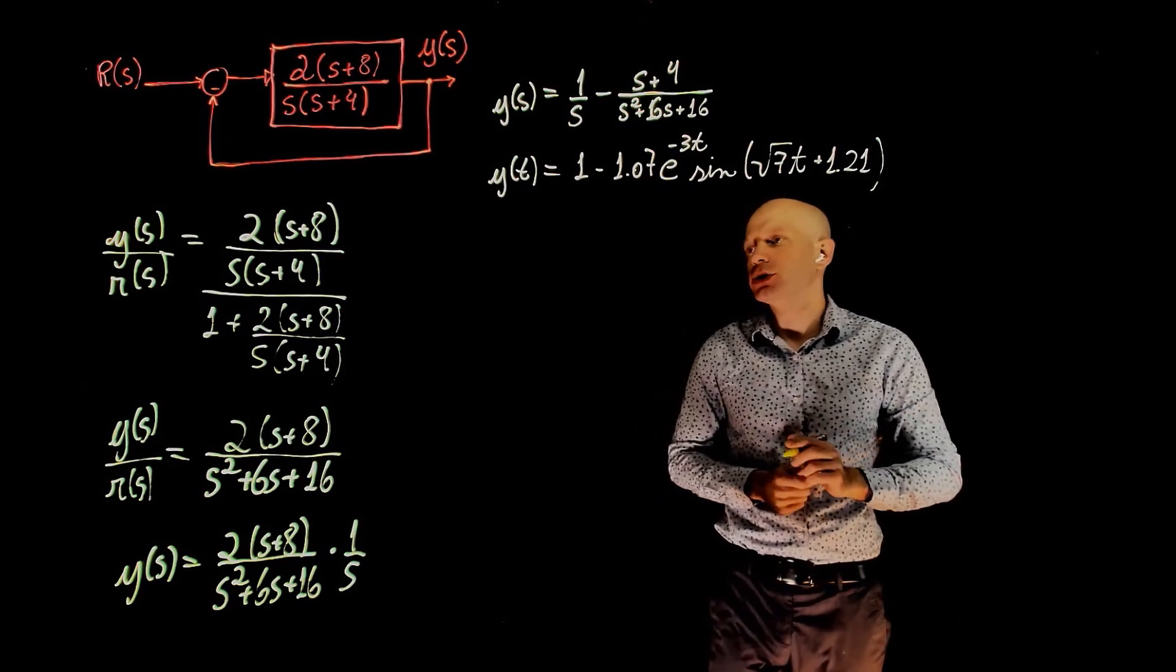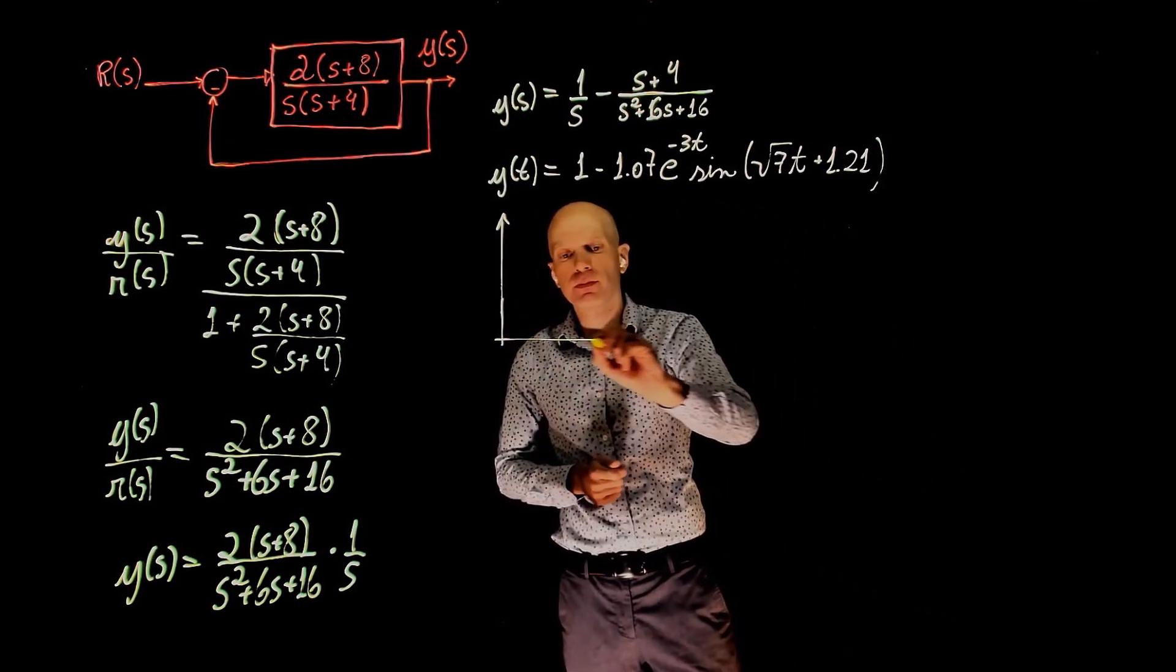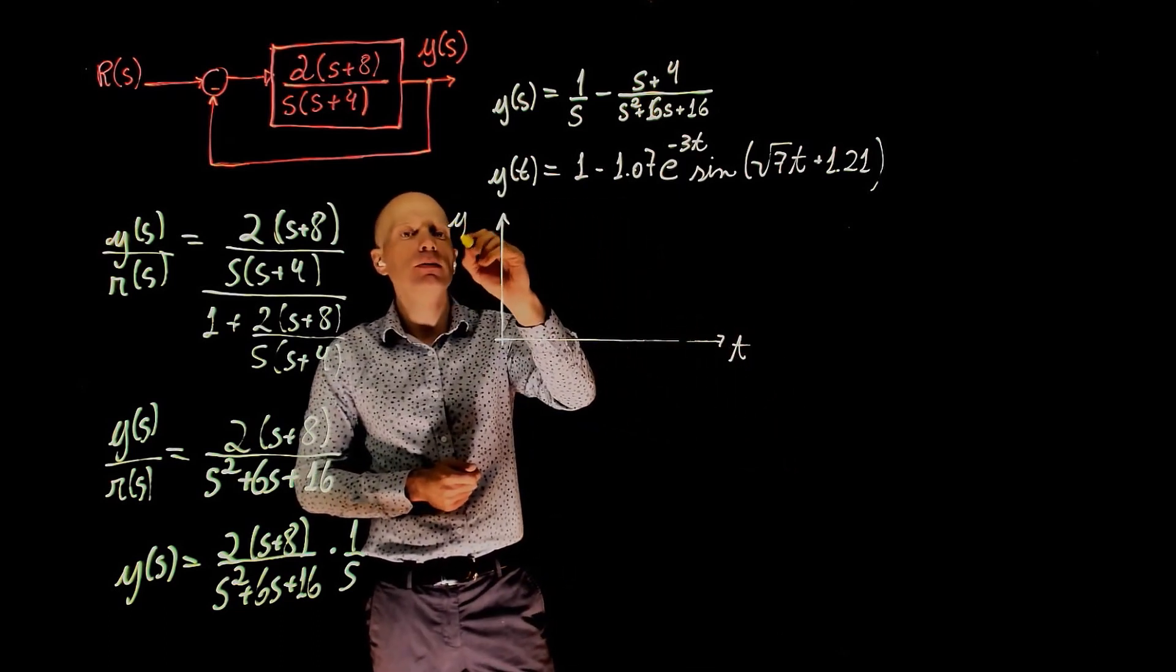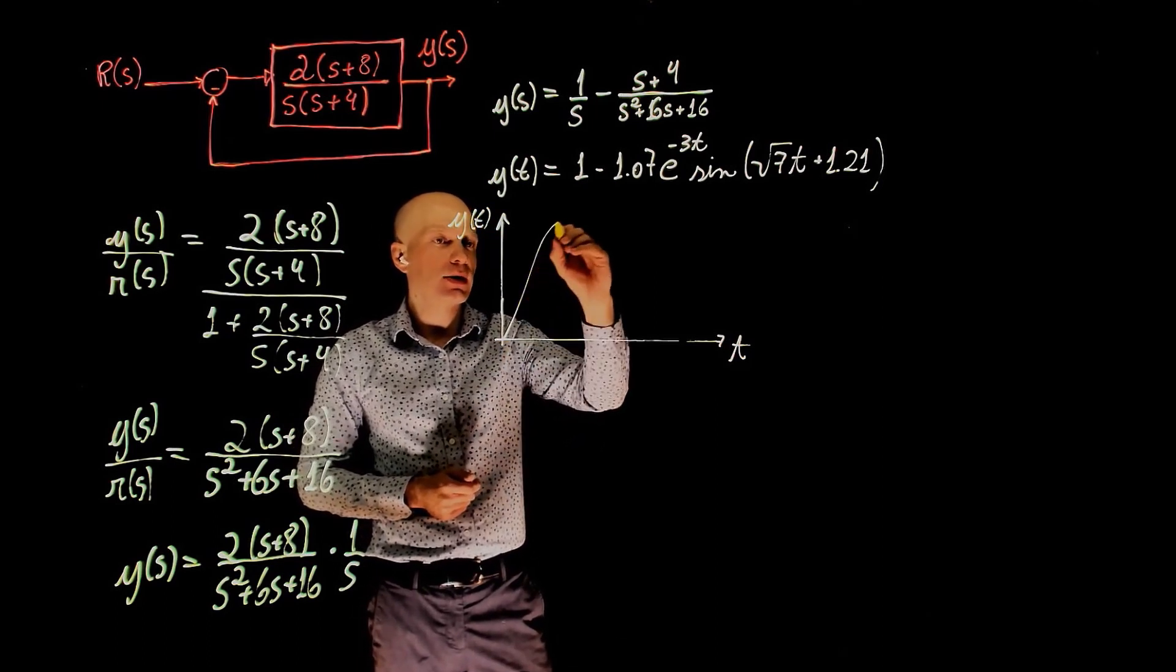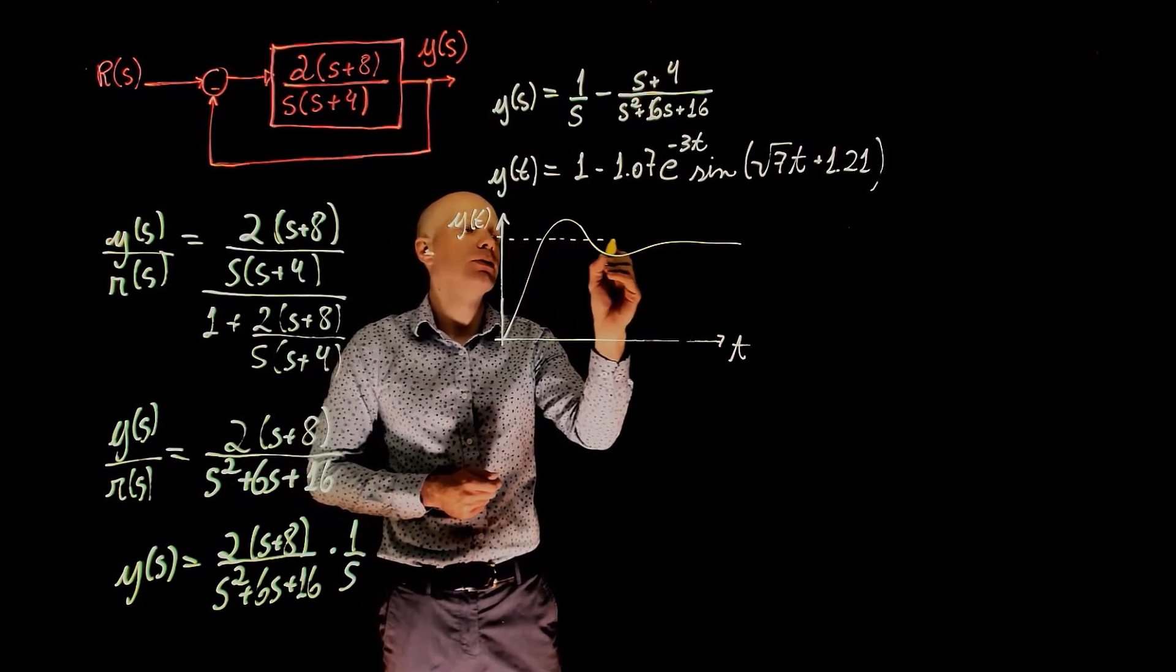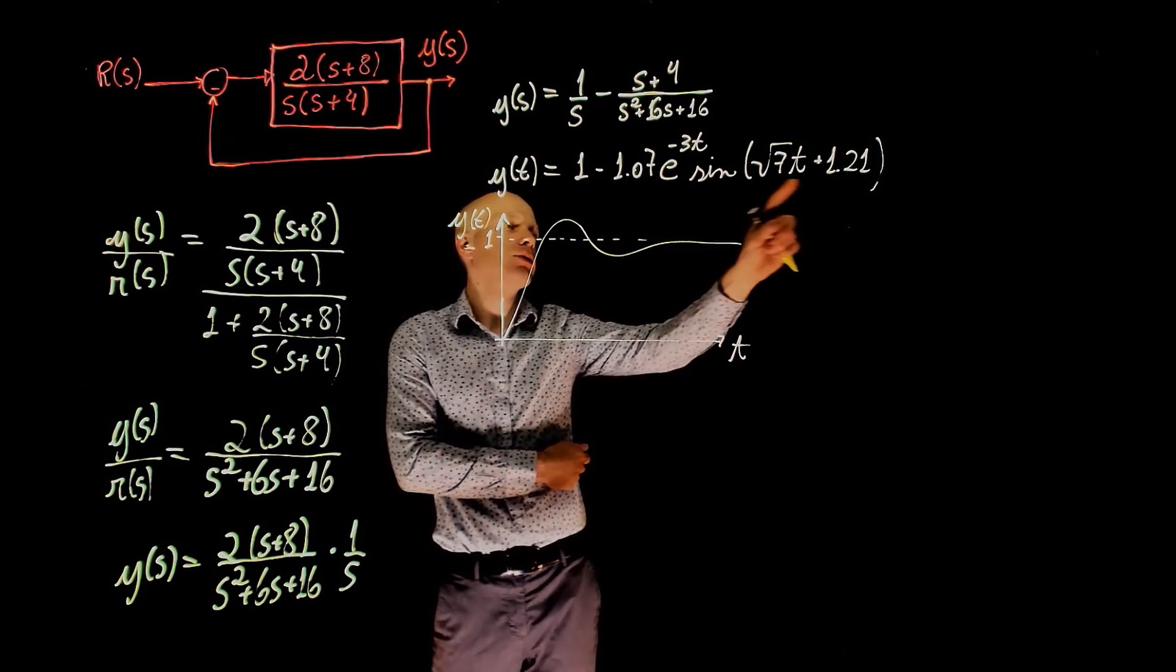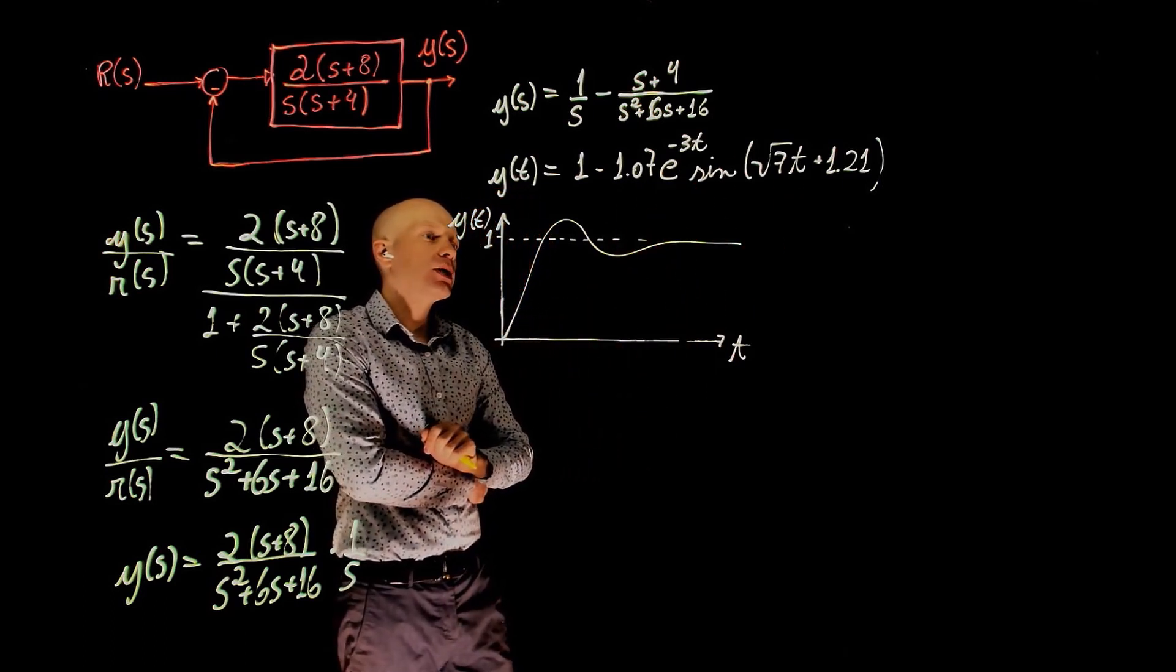If we plot this expression, we should find something that resembles this curve. So this is time, and this is y of t. We should get something like that. The final value here appears to be 1. When t tends to infinity, this whole term goes to 0.